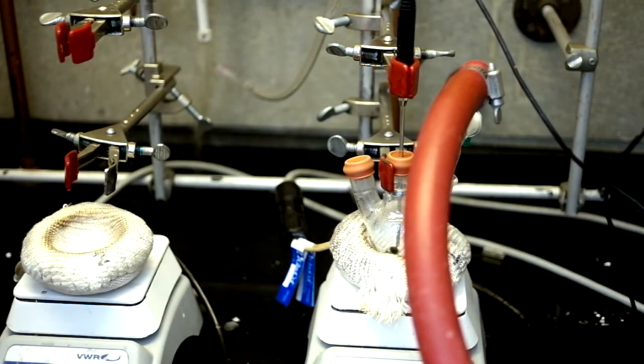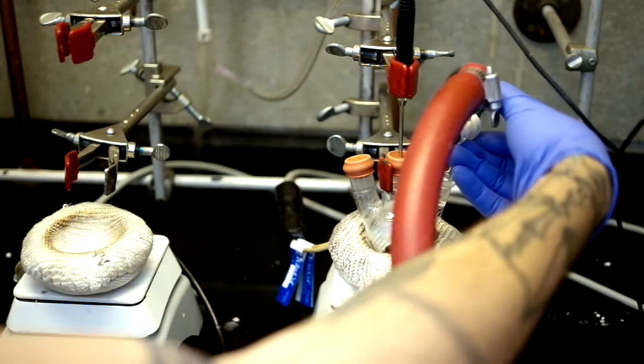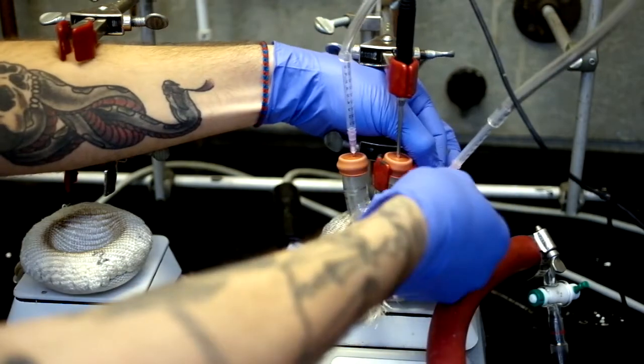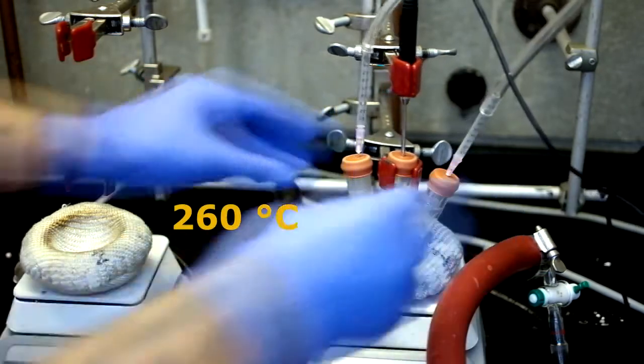You can now take the other flask with the OA and ODE and take it off of the vacuum as well using the same procedure. Once it's under argon, raise the temperature to 260 degrees Celsius.